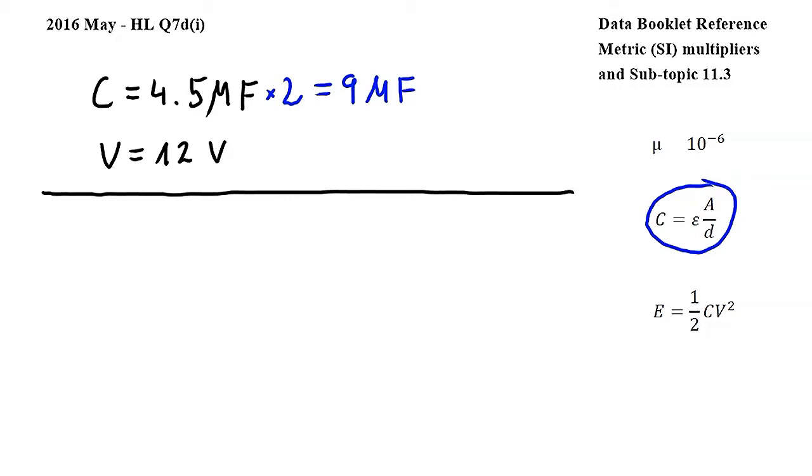Next, let's use this equation, also from subtopic 11.3, where E is energy stored, C is capacitance, and V is potential difference.